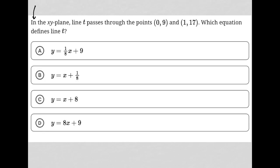So this question says, in the xy plane, line t passes through the points (0, 9) and (1, 17). Which equation defines line t?